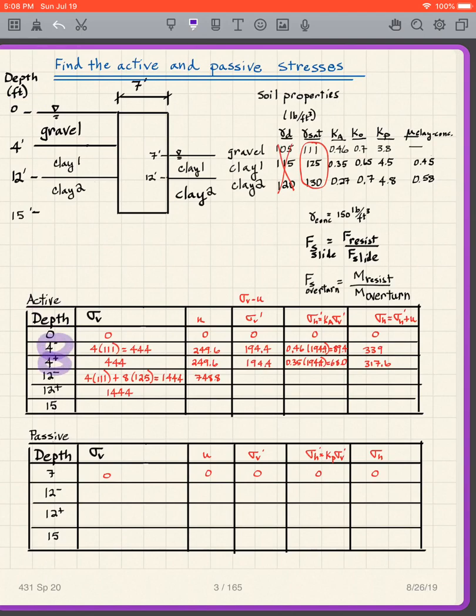So when I look in the active side, my depths of interest are going to be zero, which is the ground surface. 4 minus 4 plus. So what is that? That's right in the gravel there and in the clay one just below it. And then we have 12 minus and 12 plus. What is that? That's in the clay one and in the clay two. And then we have 15, which is the base of the wall. That's on the active side. On the passive side, we're over here. So what we have is 7. And then I've got clay one and clay two. So I have 12 minus, 12 plus. And then the base of the wall, which is 15.